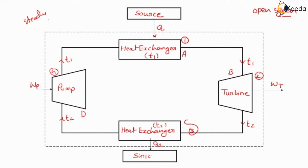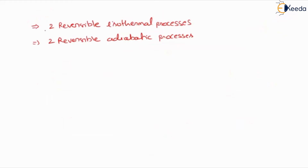This is our open system or steady flow process. You can see this dashed line, which is called the system boundary. This particular Carnot cycle is divided into four processes: two reversible isothermal processes and two reversible adiabatic processes. One isothermal process is heat addition and the other is heat rejection; one adiabatic process is work done by the system and the other is work done on the system.